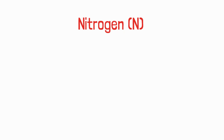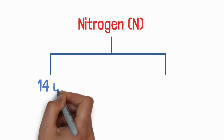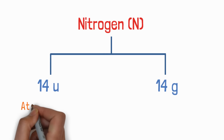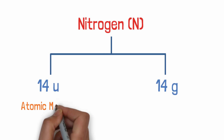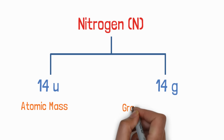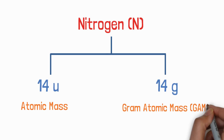Let's consider an example of nitrogen. You might have seen that we sometimes write the mass of nitrogen as 14 u and sometimes as 14 gram. So what is the difference between these two? When we write 14 u, we are talking about atomic mass — the mass of one atom. When we write 14 gram, we are talking about gram atomic mass — the mass of one mole of atoms. It is necessary to make this distinction.